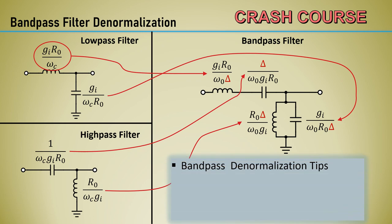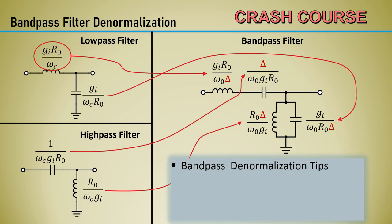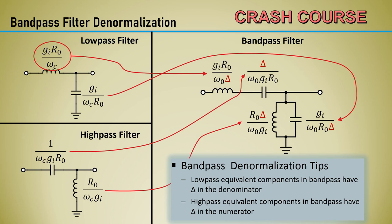Here are a couple tips for bandpass denormalizing equations. Low-pass equivalent components in bandpass have delta in the denominator. High-pass equivalent components in bandpass have delta in the numerator.